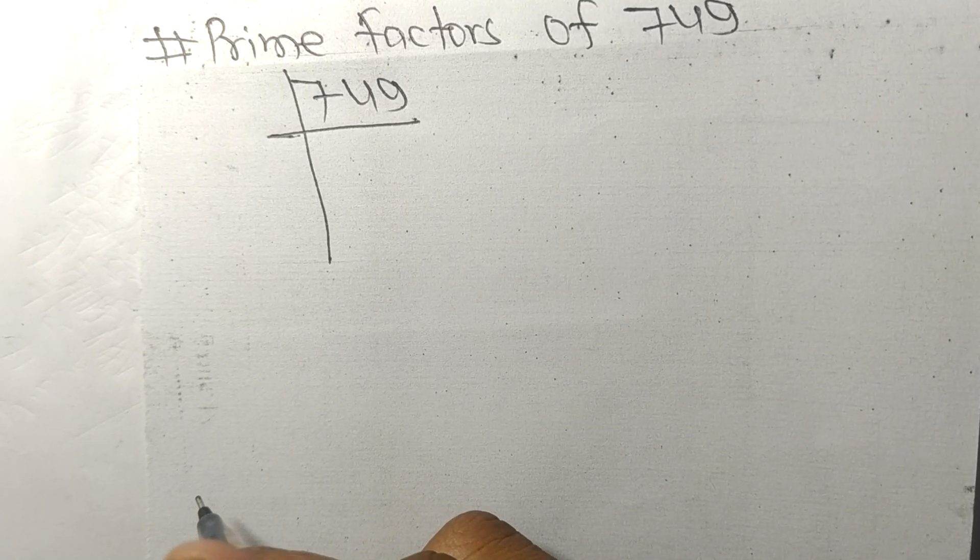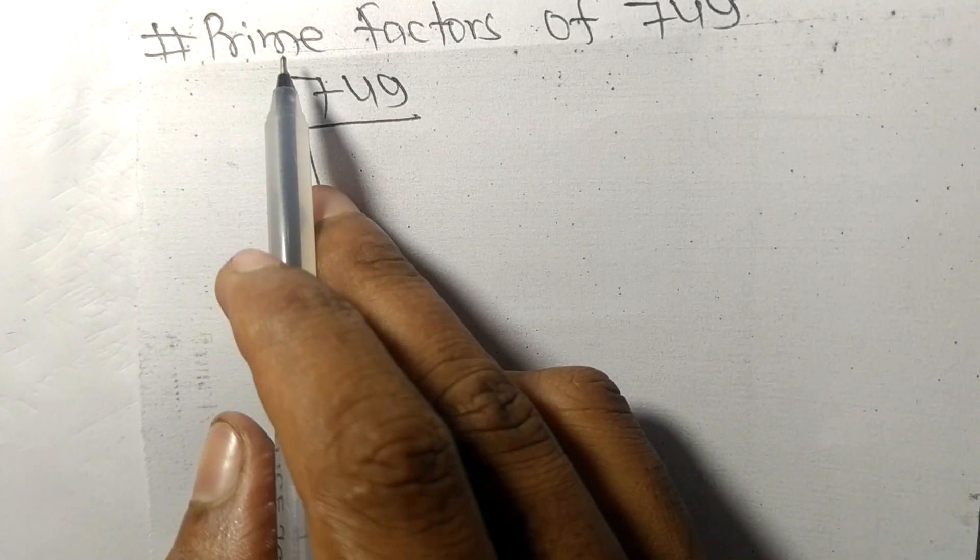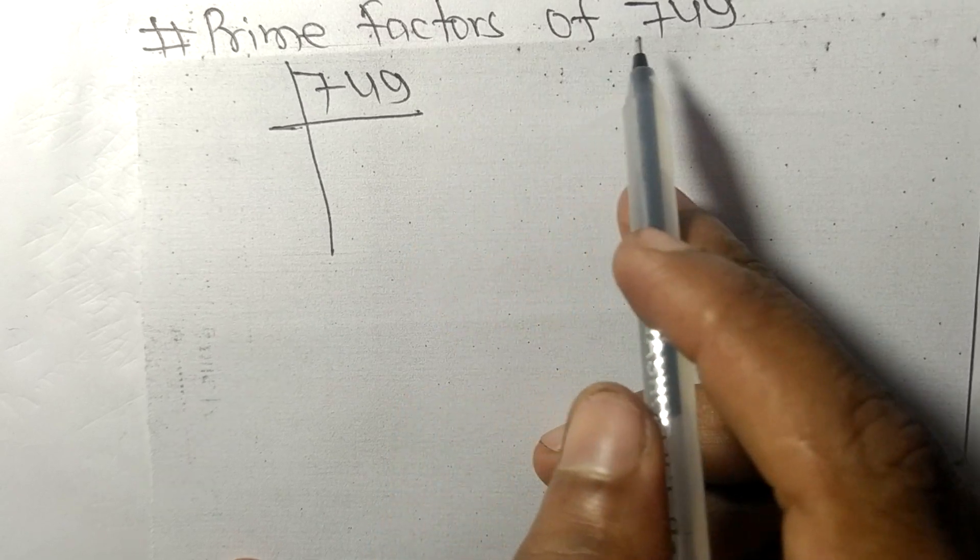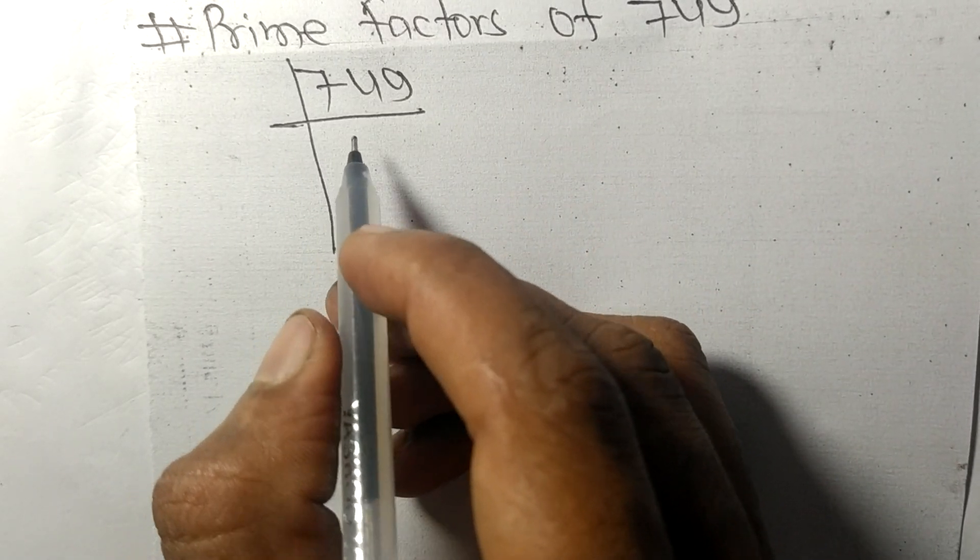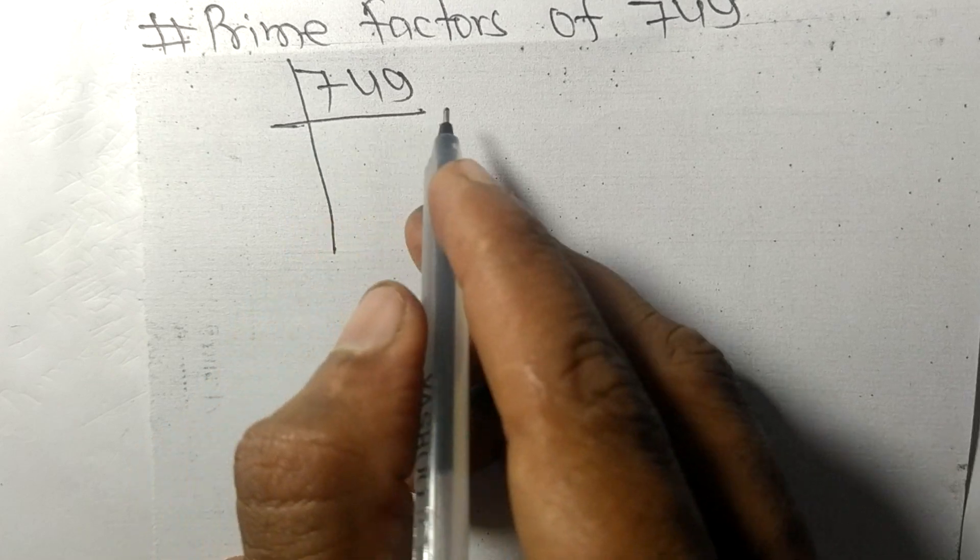Today in this video we shall learn to find the prime factors of 749. So 749 is exactly divisible by 7.